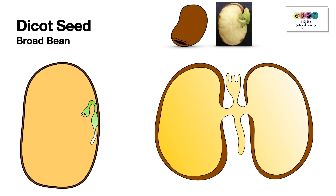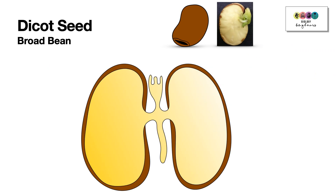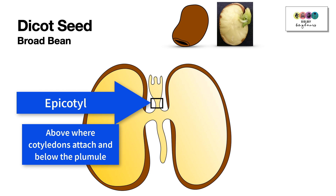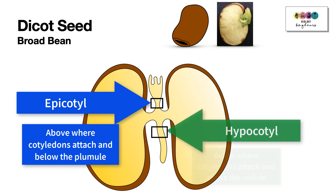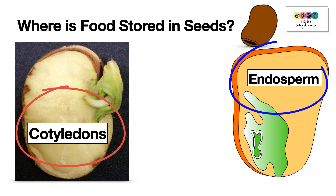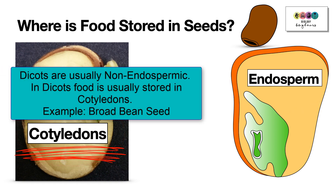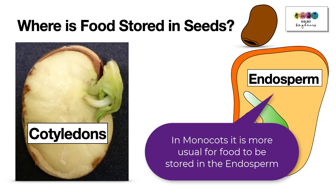You could be given a different view of the diagram — for example the broad bean seed cut in half and opened up, so make sure you can add in those key labels. You should also be able to label the epicotyl, the region just below the plumule, and the hypocotyl, the region just above the radical. Food is stored either in the cotyledons or in the endosperm — in dicots it's stored in the cotyledons, while in monocots it's more usually stored in the endosperm.